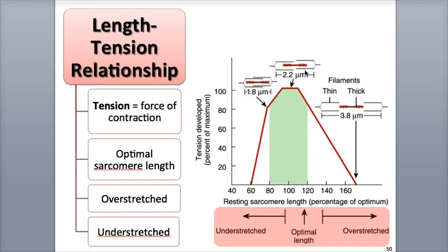Sarcomere length is another very important factor that influences muscle contraction. The force of muscle contraction is dependent on the sarcomere length before the beginning of the contraction cycle. This graph plots the resting sarcomere length, shown as a percentage of the optimum length, against the amount of tension developed, shown as a percent of the maximum tension, from 0 to 100%. When the resting sarcomere length is between 80 and 120% of resting length, muscle tension will be at its highest, shown by the peak in the graph. This is because there is optimal overlap between the thin filaments, shown in gray, and the thick filaments, shown in red, inside the sarcomere. This length is approximately between 2 to 2.4 microns, which is close to the normal sarcomere resting length.